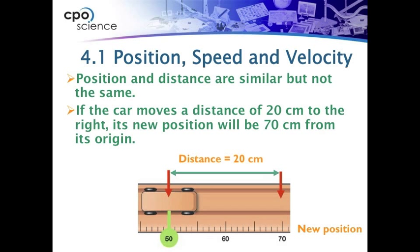Its distance, or it has a distance, it is travel. So if the car moves, it will go a distance of 20 centimeters, and it will have a brand new position relative to the origin of 70 centimeters.